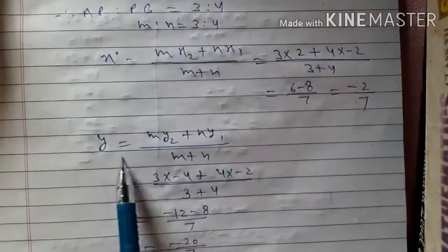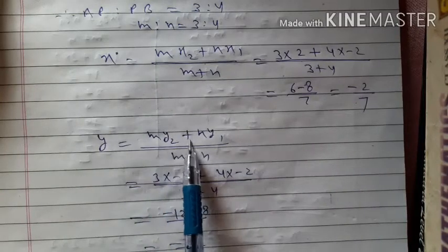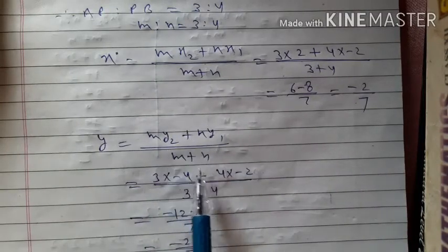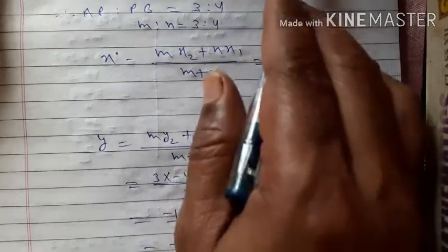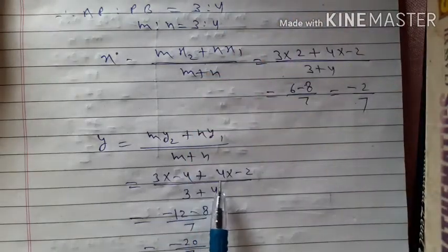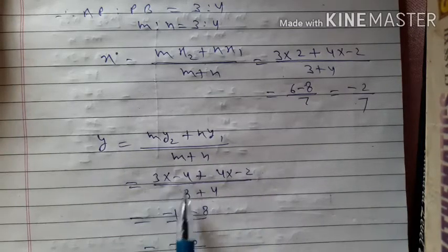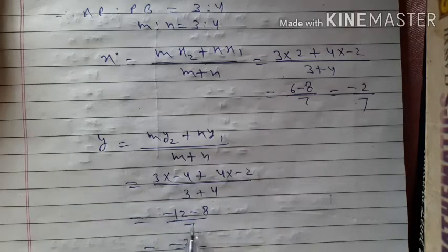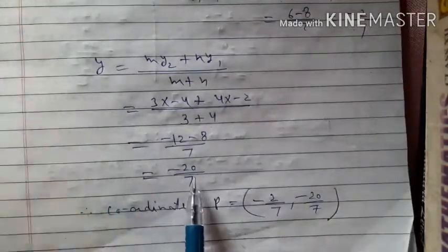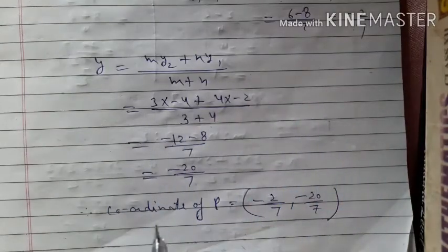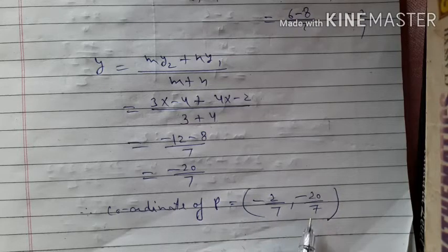For y: y = (M·y2 + N·y1) / (M + N) = (3×(-4) + 4×(-2)) / 7 = (-12 - 8) / 7 = -20/7. So y value is -20/7. Therefore the coordinate of P is (-2/7, -20/7).